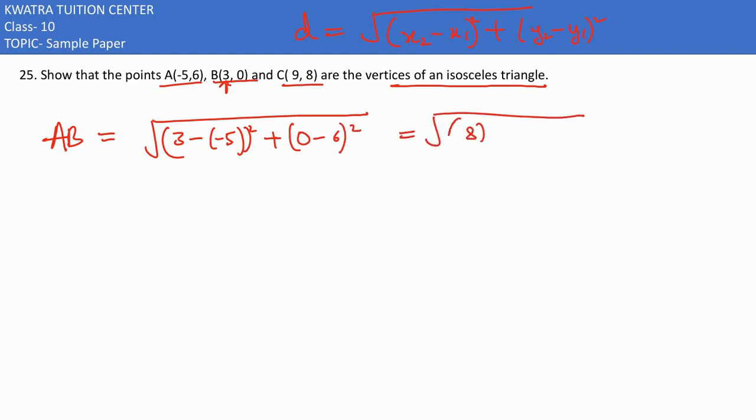So 3 plus 5 would be 8 square. Then we would be having minus 6 square. So 8 square in this case is 64. 64 plus 36 would be 100. So 100 would be root 100 would be 10 in this case.